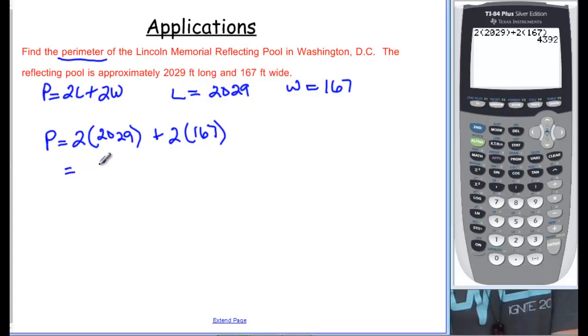And that says that that is equal to 4,392, and this would be perimeter in feet. It was in feet up here, so that means that's what our perimeter is going to be.